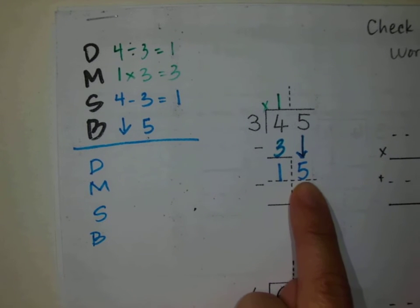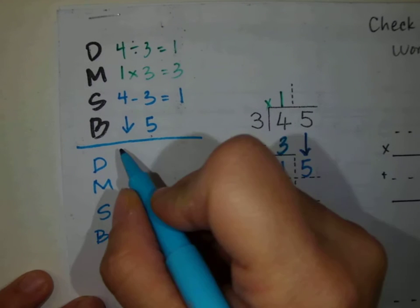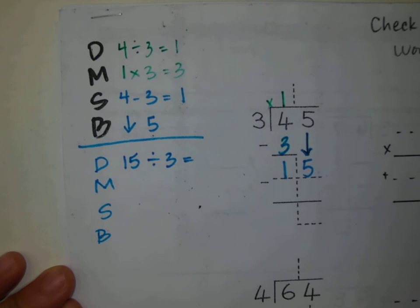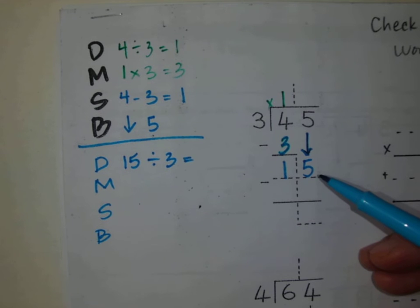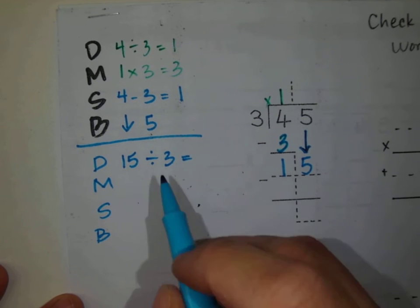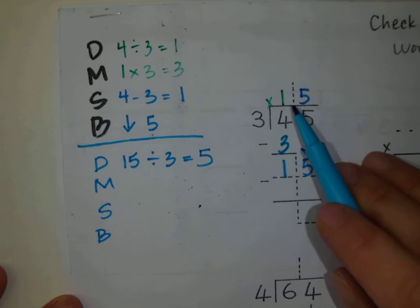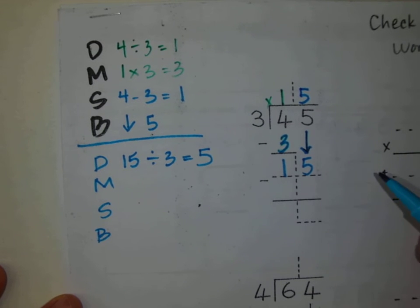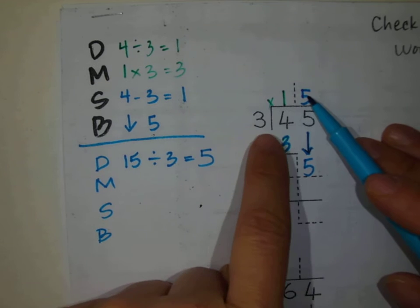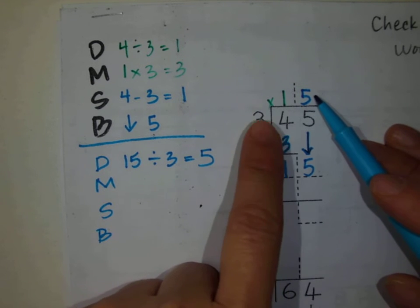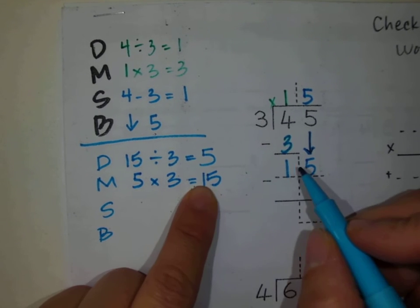Now I have a new number to divide into. I want to ask myself: how many groups of 3 can I make out of 15? Or in other words, what is 15 divided by 3? I can look at my multiplication chart on my desk name tag to help me. What times 3 equals 15? 5. This 5 will go right there. Please make sure you are writing your numbers in nice neat columns — that will make it easier for you. The next step is mommy multiply. We're going to multiply this 5 with this 3. 5 times 3 equals 15. Write this 15 here.